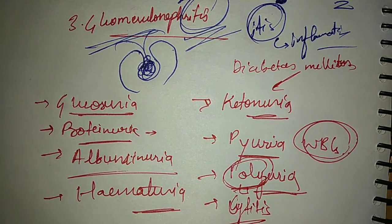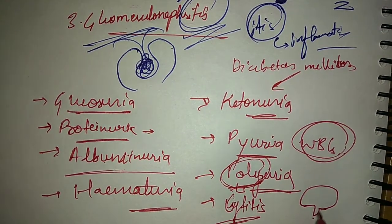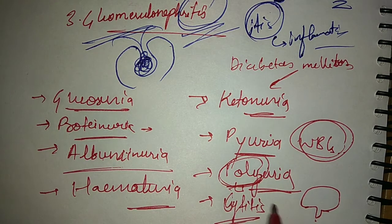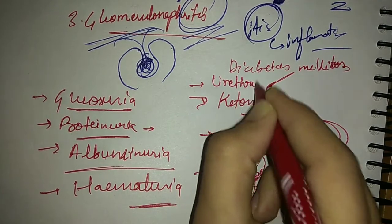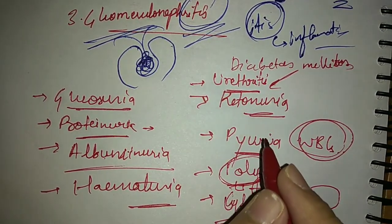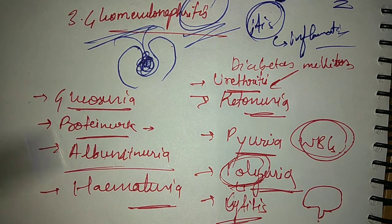Then cystitis, which is the inflammation of urinary bladder. The urinary bladder's inflammation is cystitis. Then urethritis is the inflammation of urethra. These were the terms related to excretion.